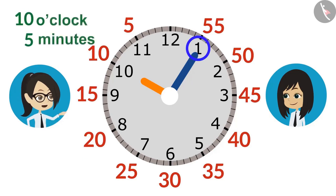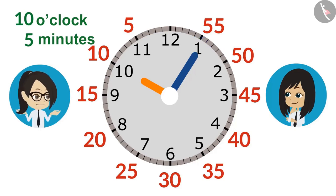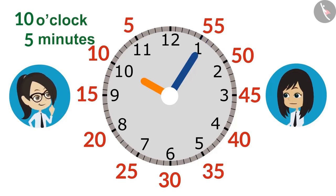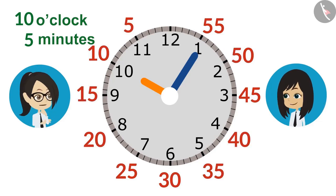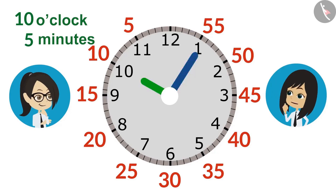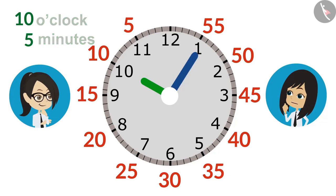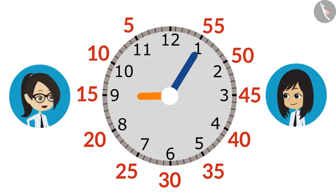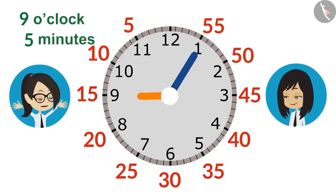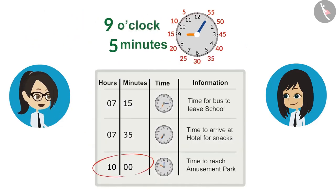This means we have to leave the hotel at 5 minutes past 10 o'clock. No, Vandana, this is incorrect. How is it incorrect? 5 minutes past 10 o'clock means it is after 10 o'clock, whereas we have to leave 55 minutes before 10 o'clock. You moved the minute hand behind but forgot to move the hour hand. It's 9 o'clock before 10 o'clock. This means we have to leave the hotel at 5 minutes past 9 o'clock so that we reach the amusement park at 10 o'clock.